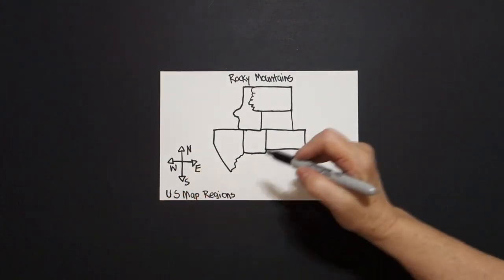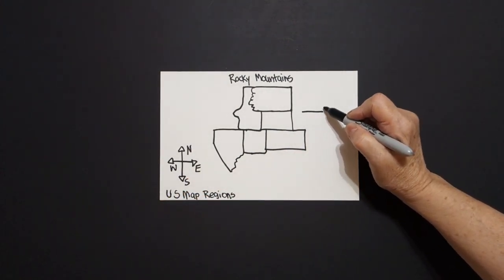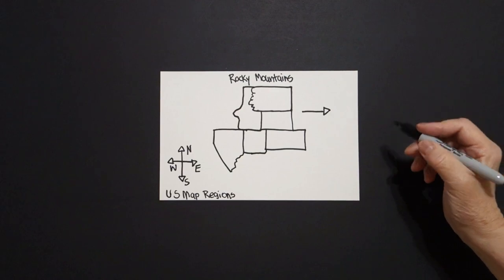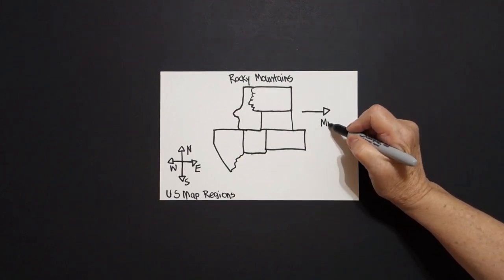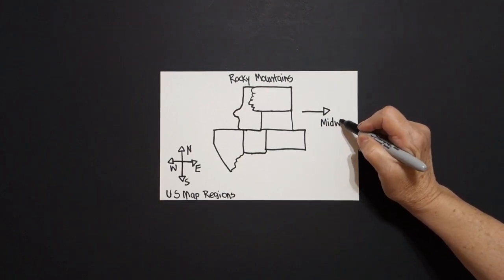Now if we go towards the east, straight line, triangle, we're going to run into the midwest region.